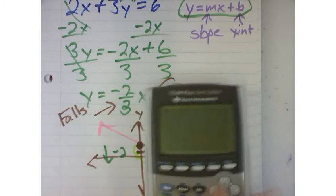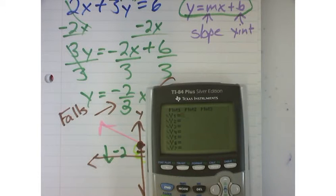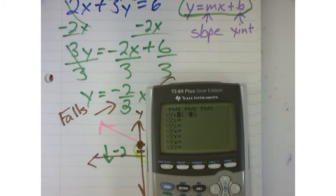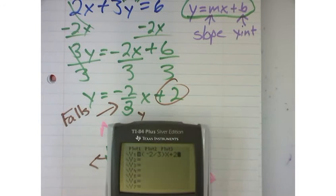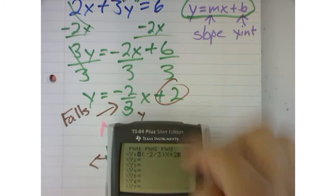But if you've solved the equation for y and you've got that correct, then what you could do is you could hit y equals, which is this button right here, and then in parentheses put negative 2 divided by 3, just put the x after that, and then plus 2. And so what I'm doing is I'm just entering this equation into the calculator.